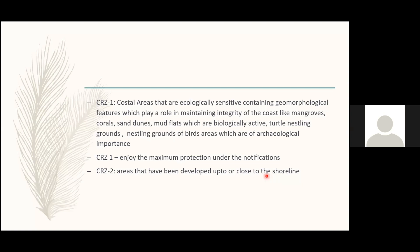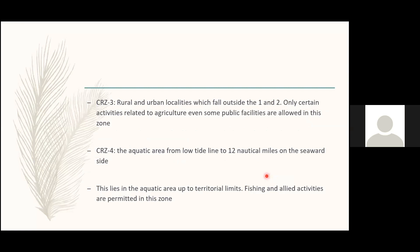CRZ-2 refers to areas near the shoreline that have already been developed — mostly areas or buildings constructed before the introduction of CRZ in 1991. CRZ-3 covers rural and urban coastal zones falling outside categories one and two; only certain activities like agriculture and traditional fishing are allowed. CRZ-4 is not a land area but the sea zone from the low tide line to 12 nautical miles offshore, and this too is governed by CRZ rules.